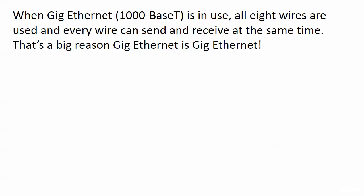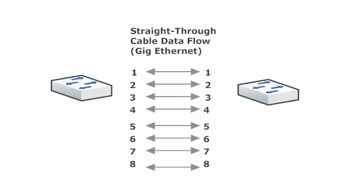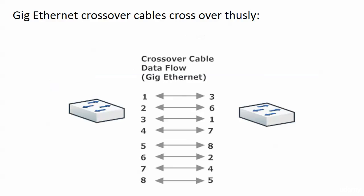Now with GigEthernet, all eight wires are used and every wire can send and receive at the same time. That's 1000BaseT GigEthernet, and that's a big reason that GigEthernet is GigEthernet to begin with. So not only with a straight-through cable are you using all eight wires when it comes to GigEthernet, but there's also simultaneous send and receive on every wire. So you see how lightning fast that is as compared to fast Ethernet and regular old Ethernet.